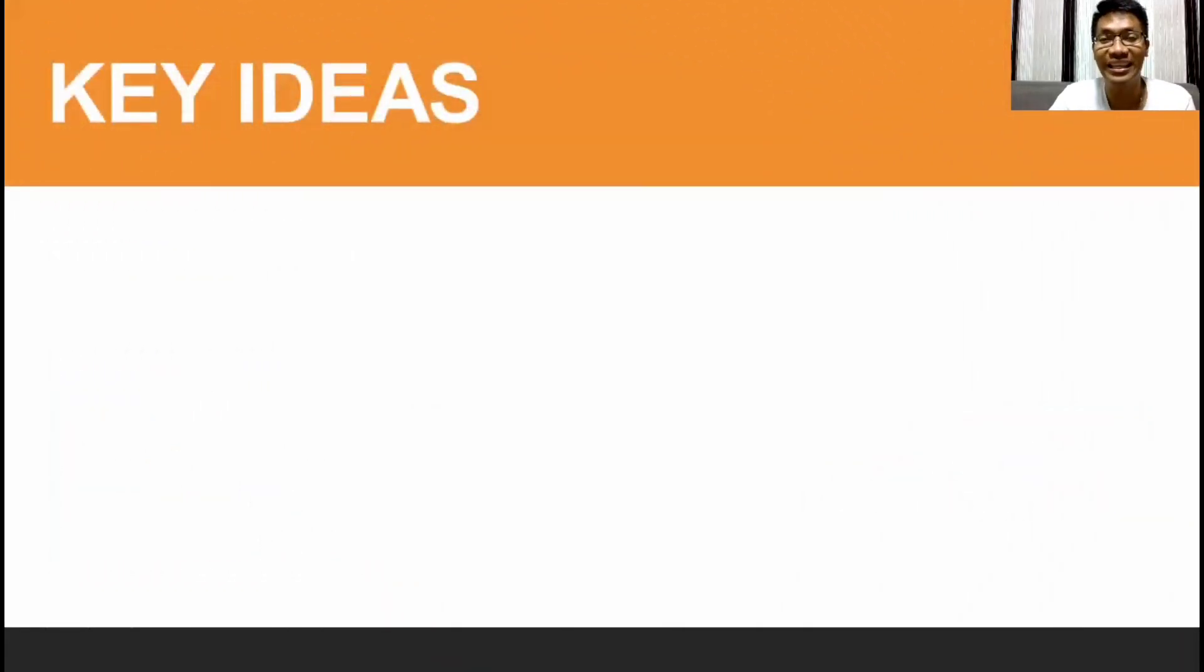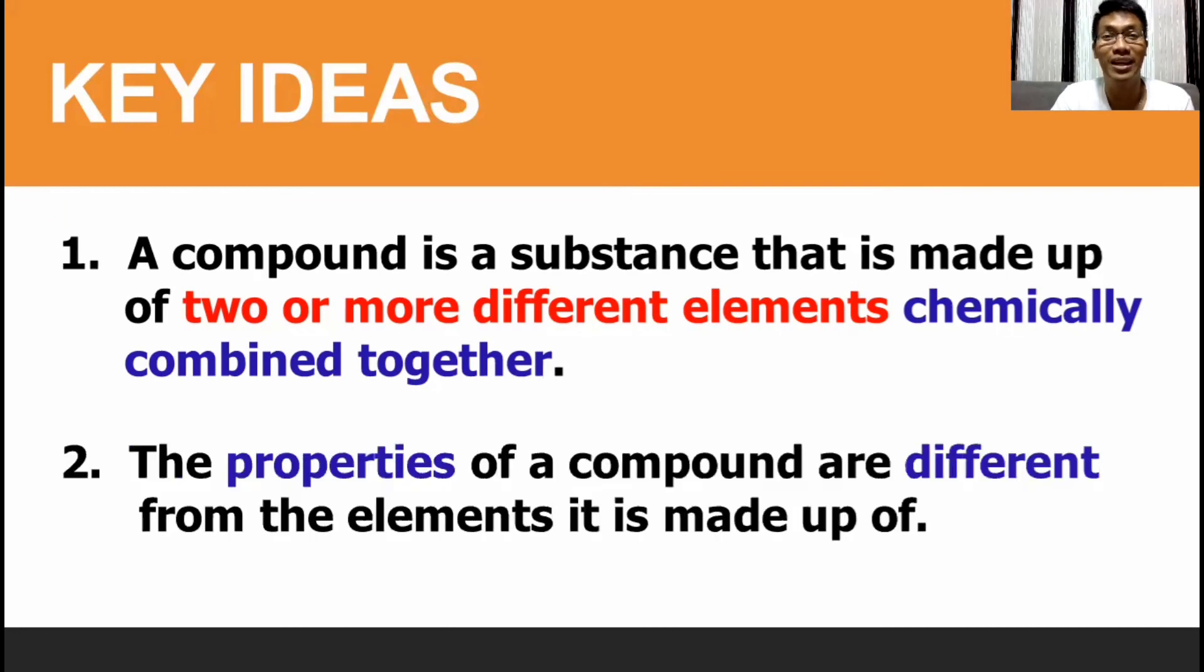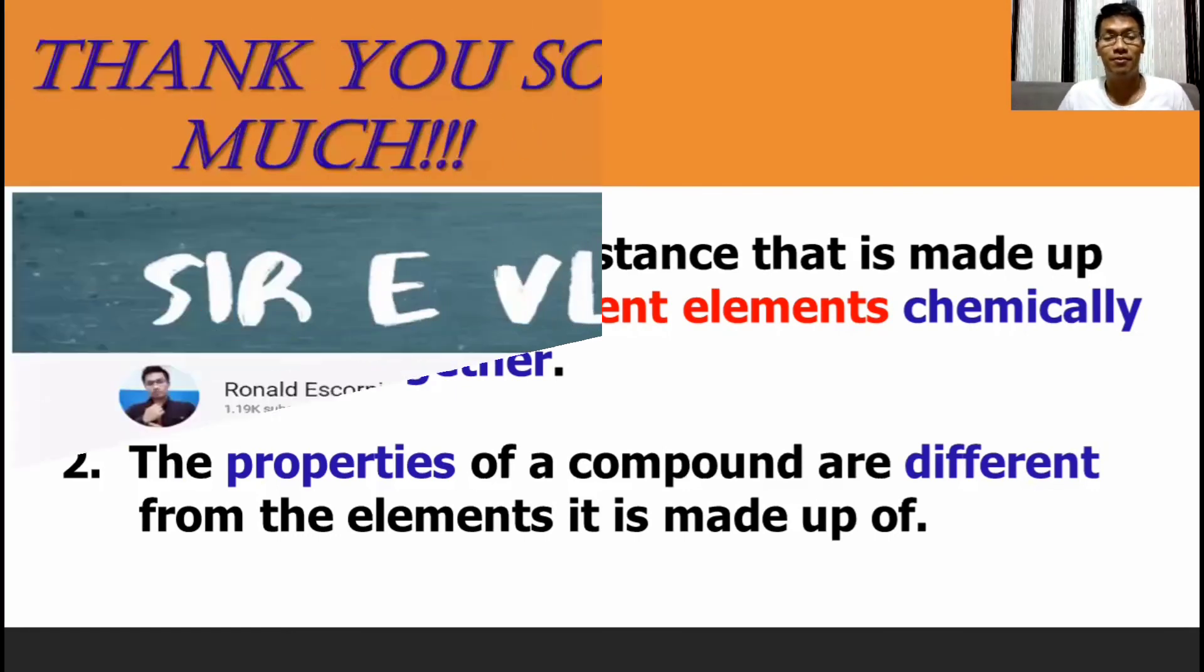So, what are the key ideas that we need to remember? First one, a compound is a substance that is made up of two or more different elements chemically combined together. Second, that I would like to give emphasis is the properties of a compound are different from the elements it is made up of.